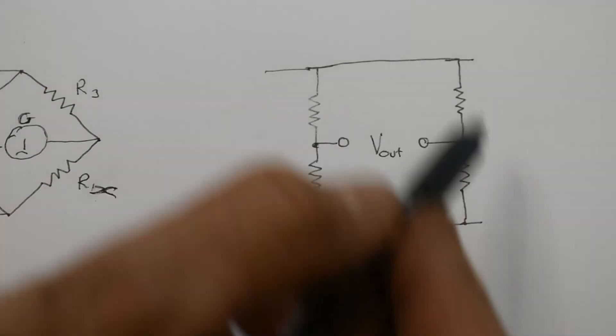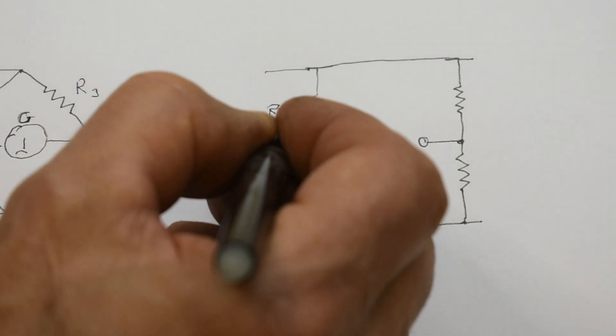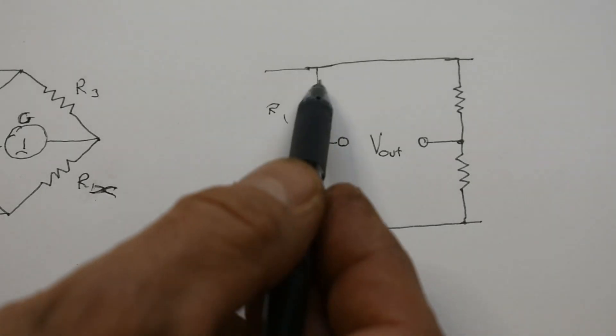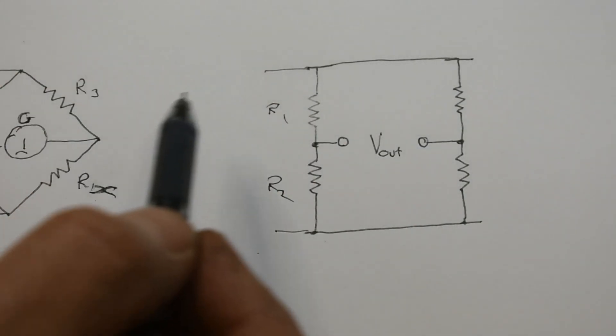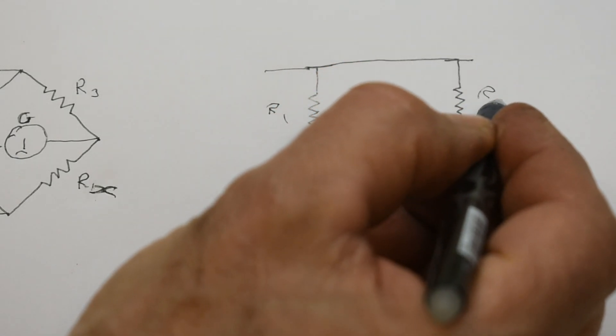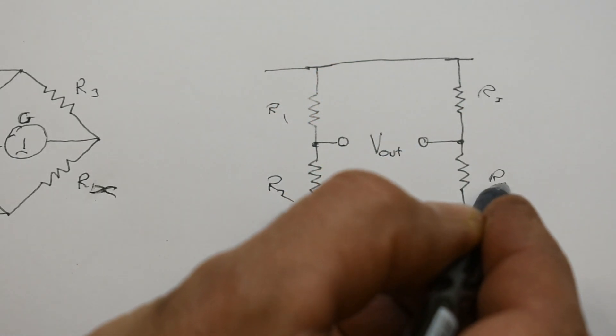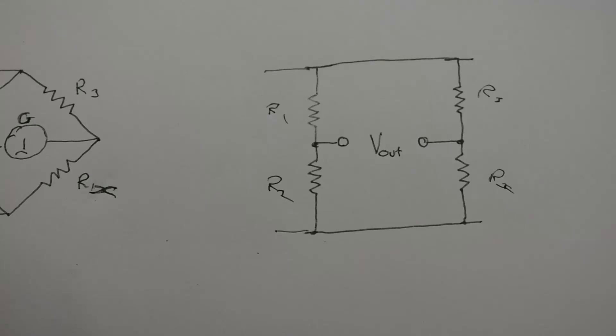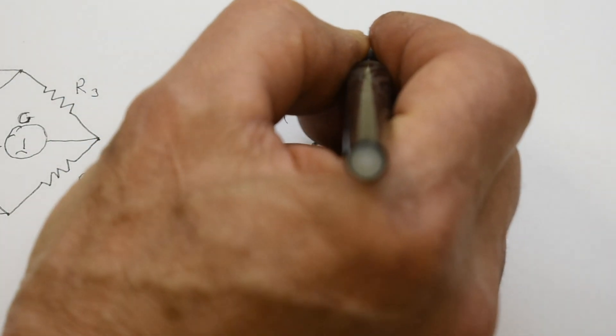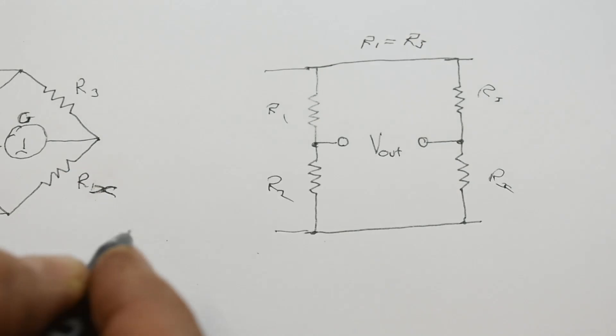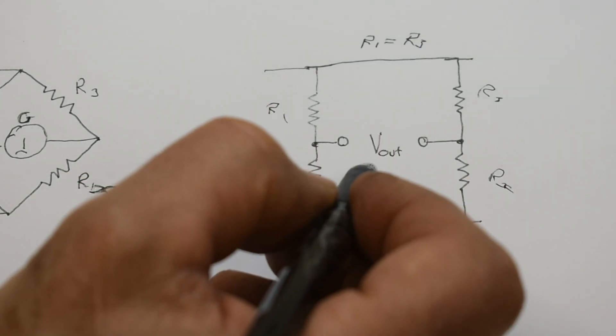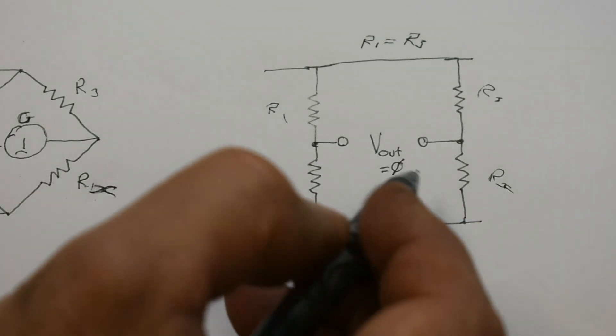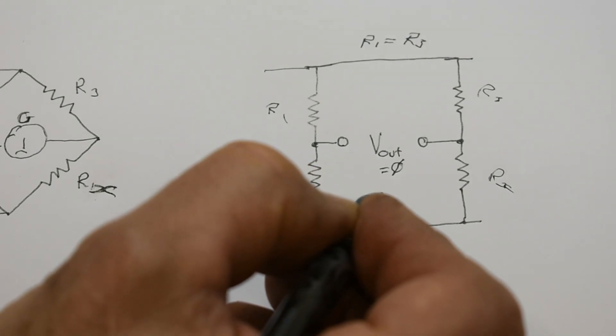So here we have two potential dividers on the supply. So the voltage here is fixed by these two resistors and the voltage here is fixed by these two resistors. If R1 and R3 are the same values, and the voltage can be set here that the voltage is equal to zero, then we have to assume that R2 is the same as Rx.